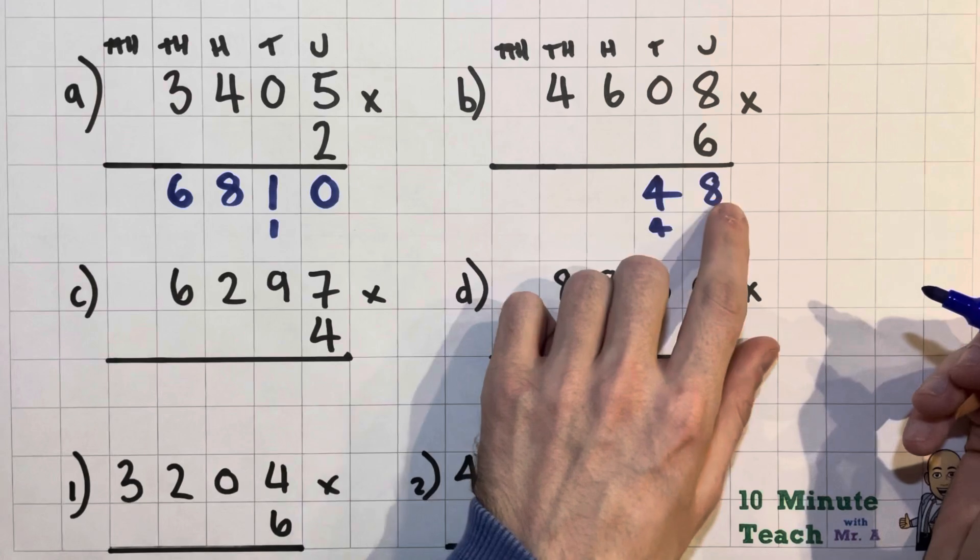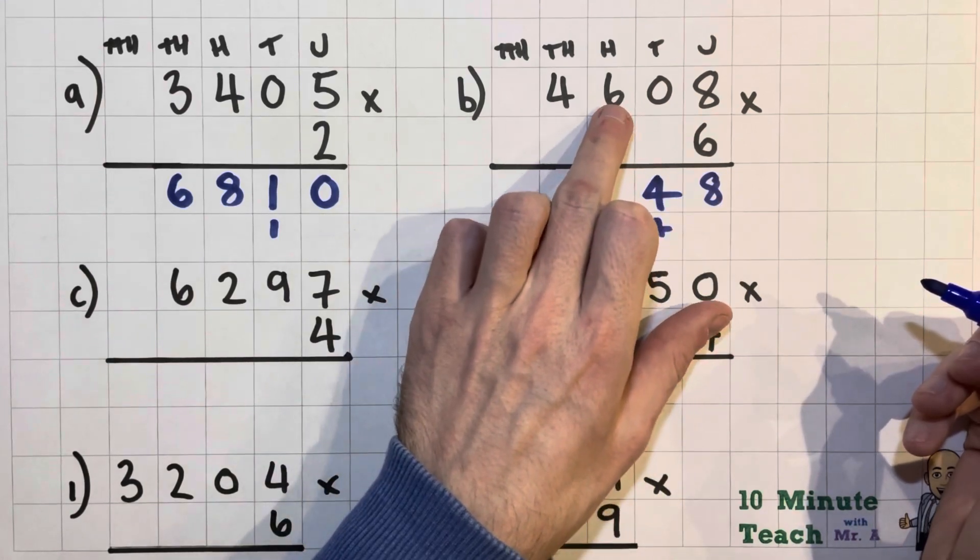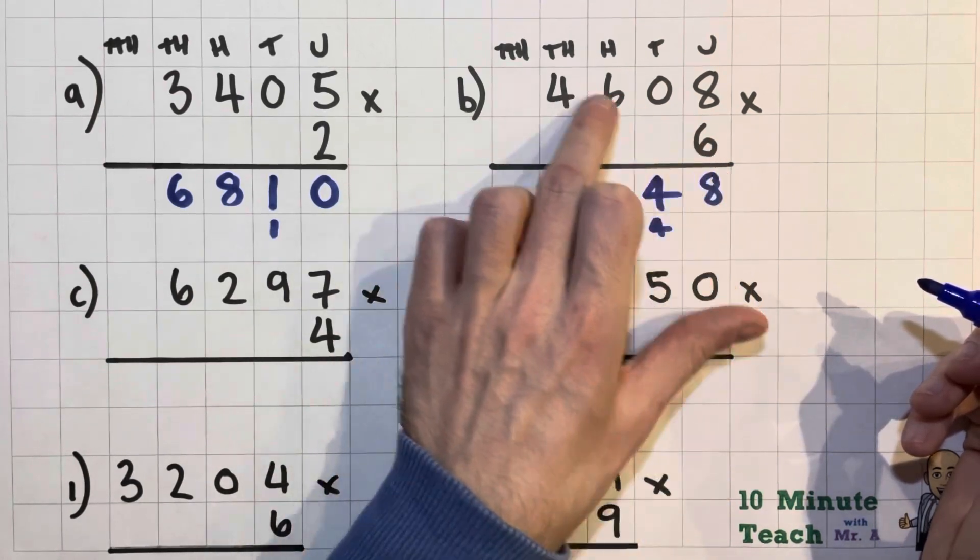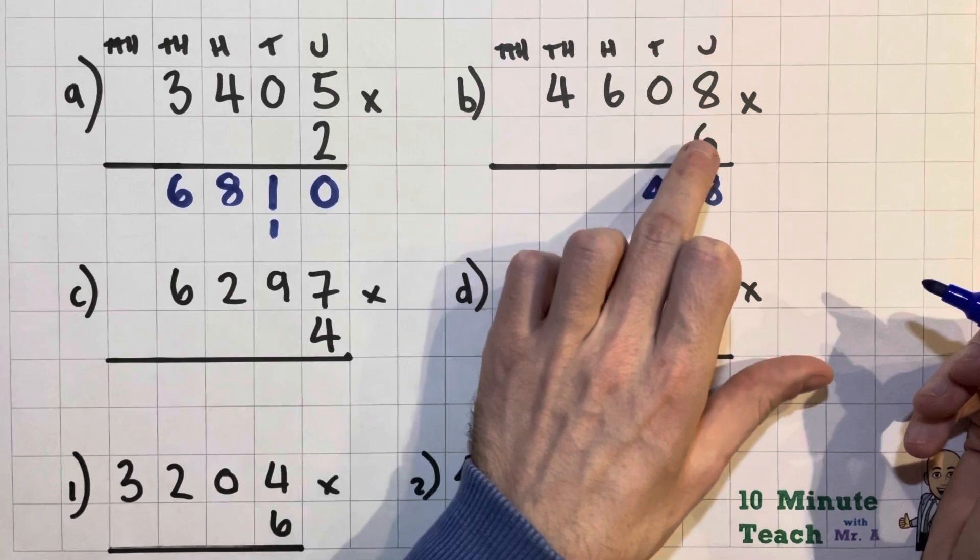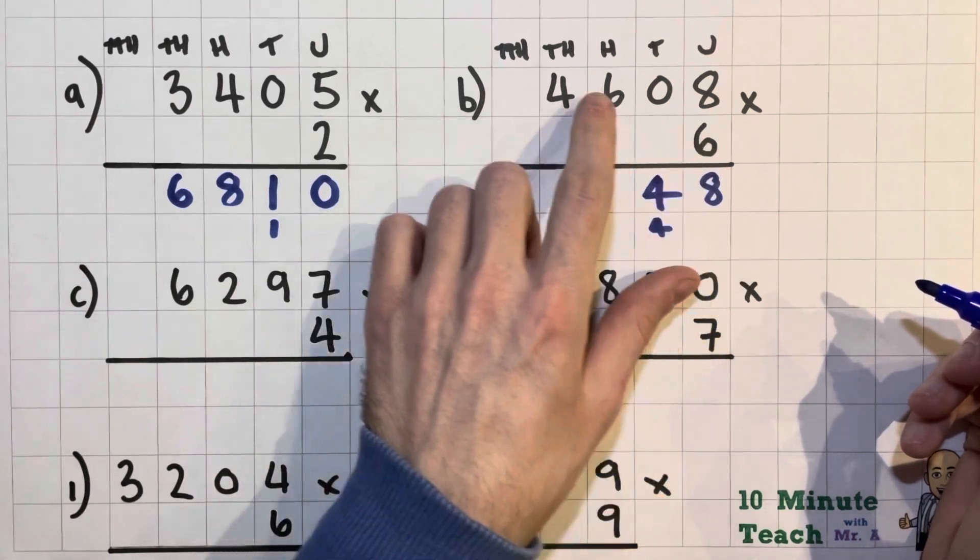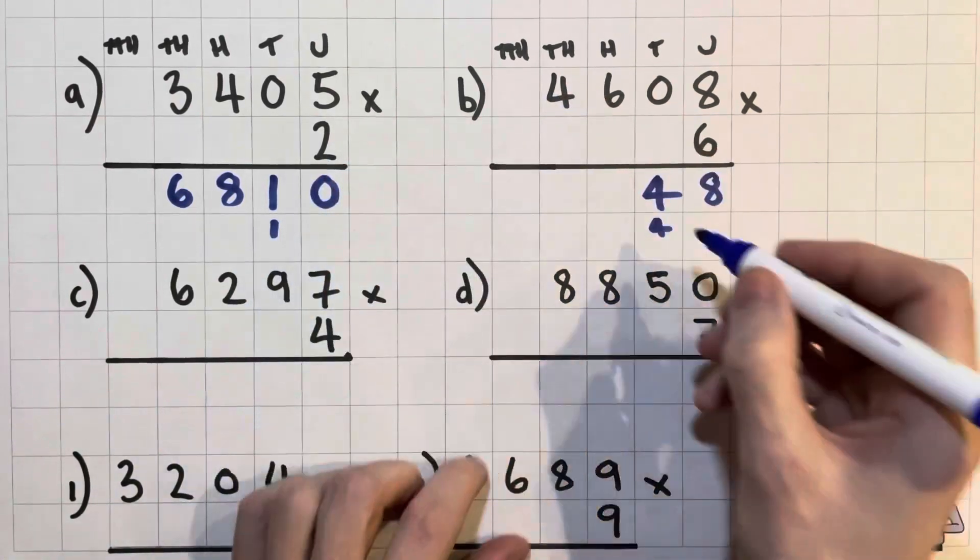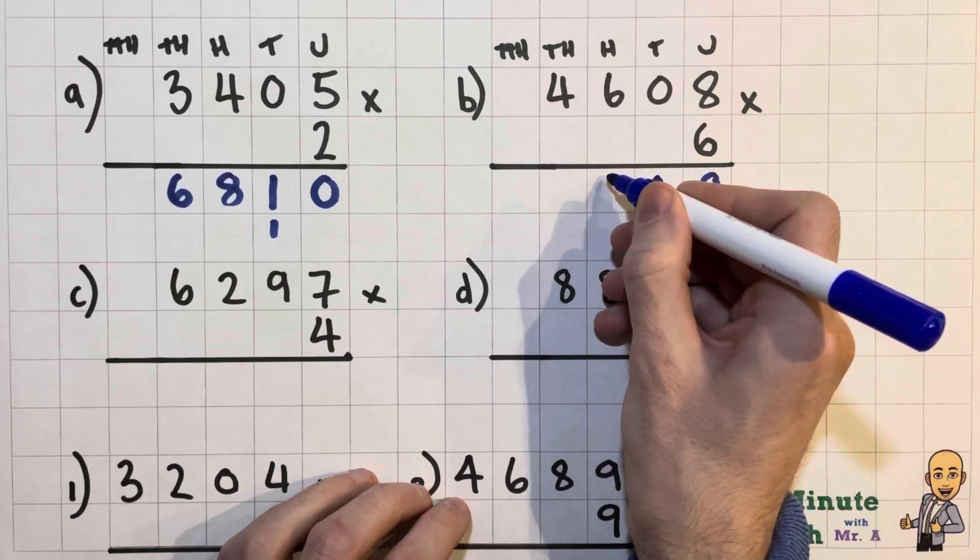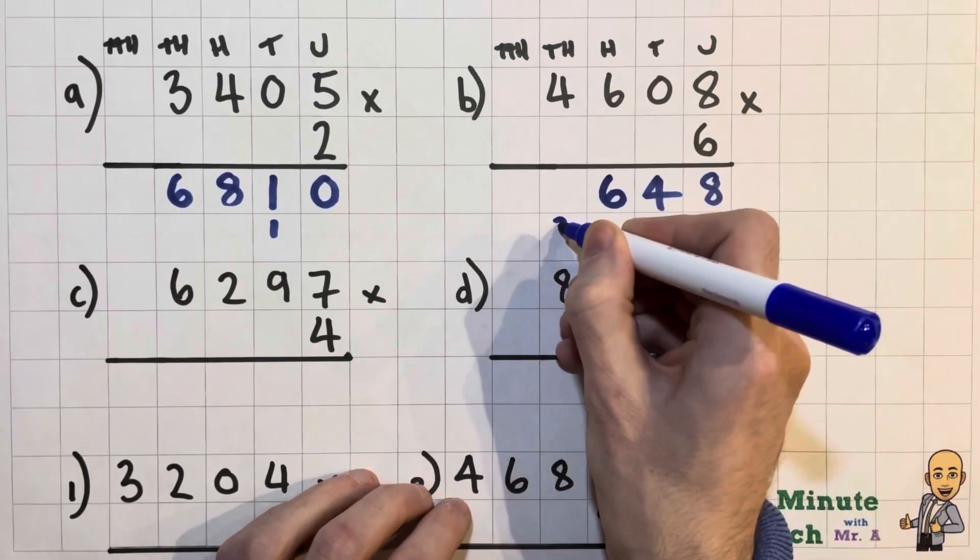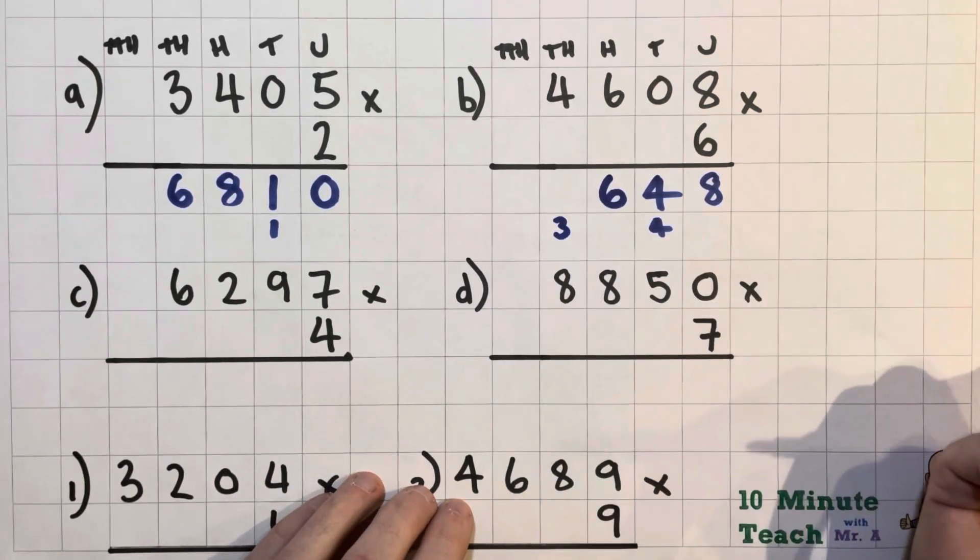So 6 multiplied by 6 is a square number. So 6 sixes are 36, so it's 600 times 6 for 3600. So I'm going to put my 600 and carry my 3000 over.